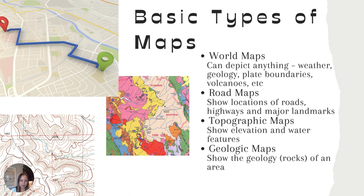So that's going to be our topographic maps. These show elevation and water features, and sometimes we see some occasional landmarks. But they are not as road-detailed or street-detailed as your street map or road map would be.